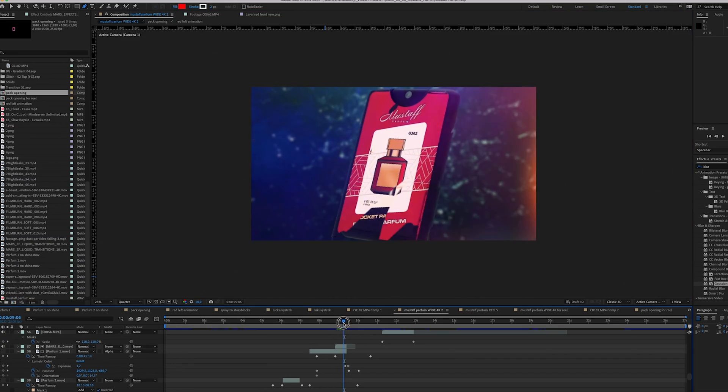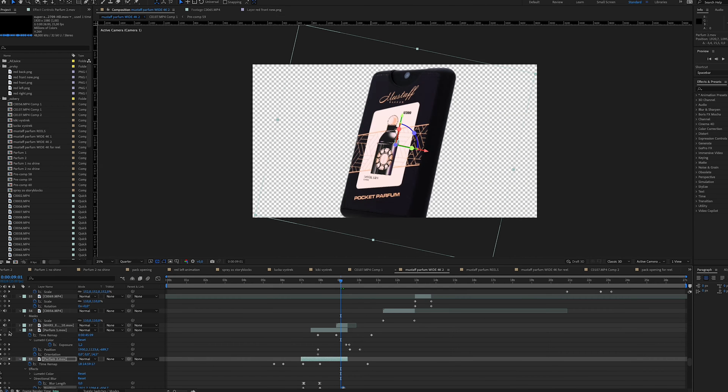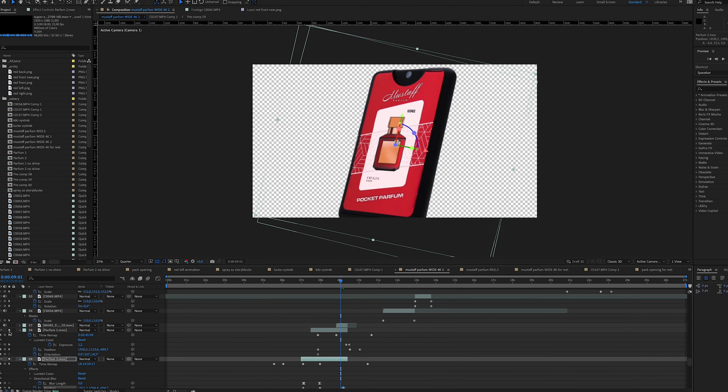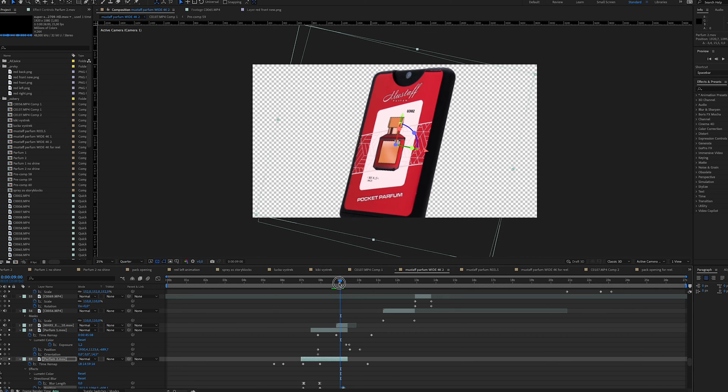Now I can quickly explain the next steps. So the next was the transition between two perfumes. Basically I put two clips on the timeline. Both clips must be the same so the timing, the position, the scale must be the same on the both clips.